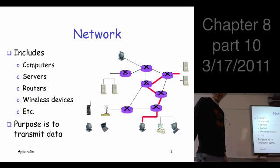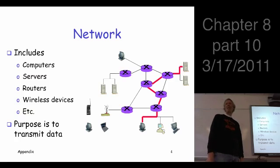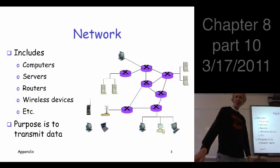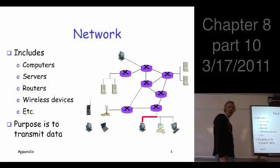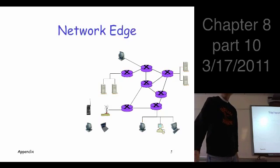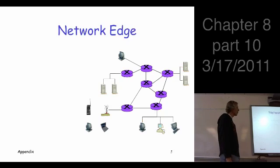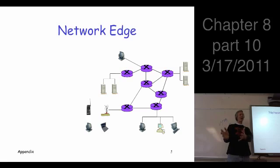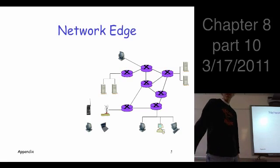We have some awesome animation in this appendix. So you want to get your information from one point to another — it passes through the network and gets to where it's supposed to go. Now there are sort of two parts to the network: the network edge and the network core. What's on the edge? All the stuff you see every day — your laptop, your desktop, your cell phone. That's the edge of the network.